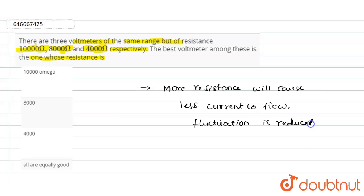According to that, from this statement if you observe, the one which is having the more resistance is more relevant. So according to that, option A has 10,000 ohms, so that is the best voltmeter among these because this is having the more resistance and fluctuation will be reduced due to the low current flow. So option A is the correct answer for this question. Thank you.